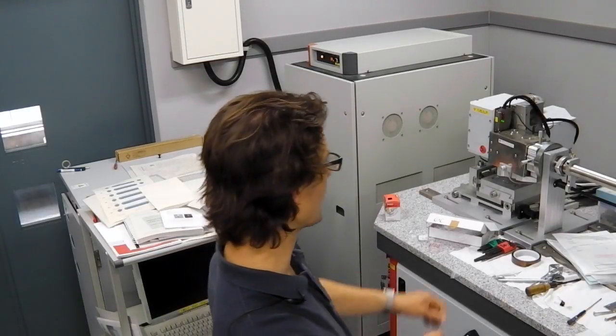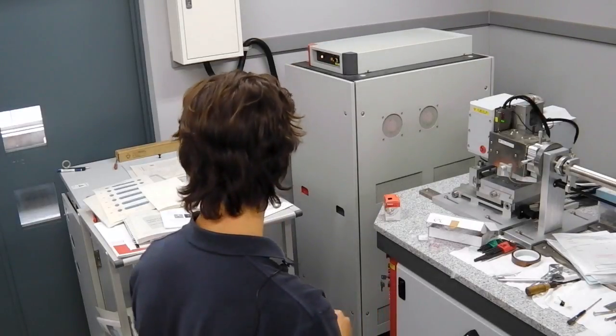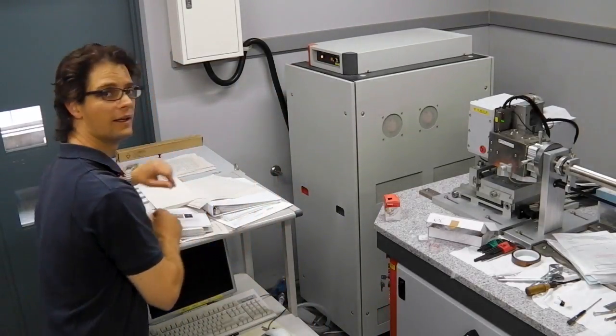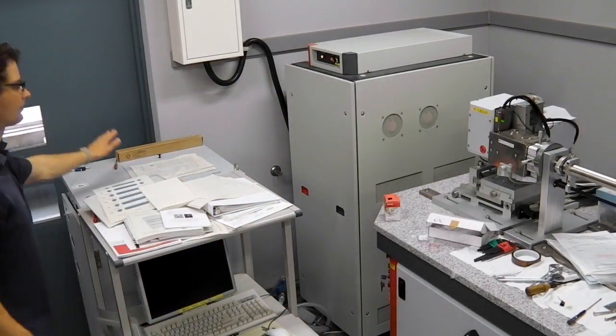Now this particular X-ray source is a rotating anode type. It consists of three components. We have the actual X-ray source over here, the high voltage power supply here, and the cooling system right over here.